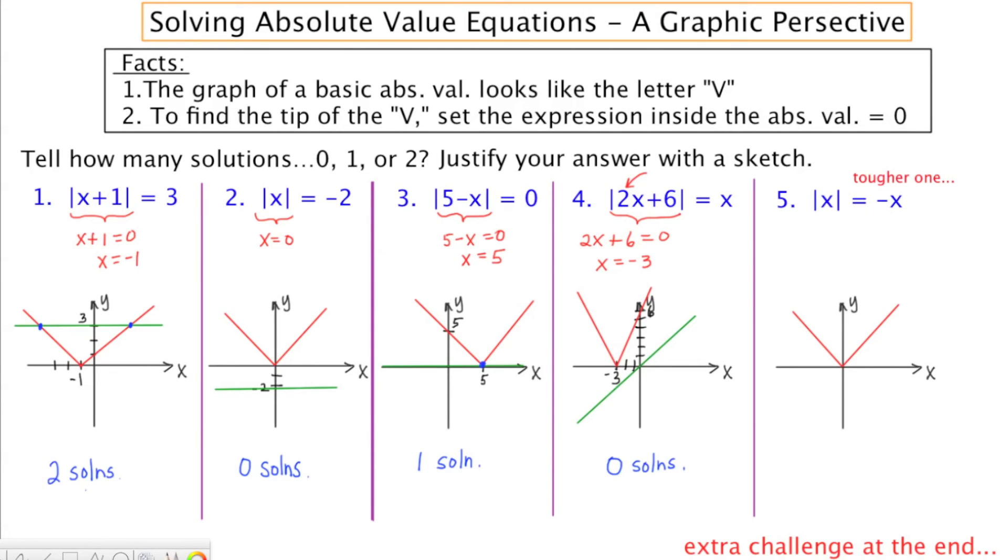Moving to the right-hand side, we've got negative X or Y equals negative X. Asking where do the red and green graphs intersect, this happens at multiple locations, at the origin and all the points to the left of the origin. So it's not zero solutions. It's not one. It's not two. It's actually infinitely many.